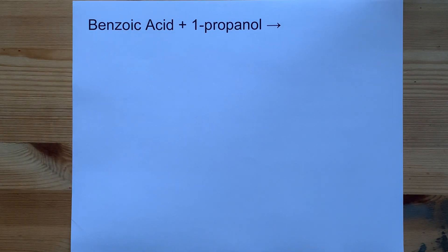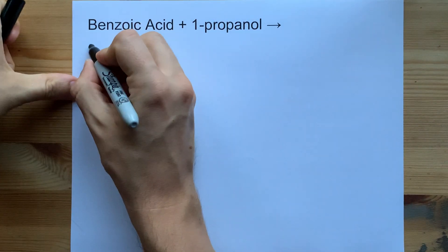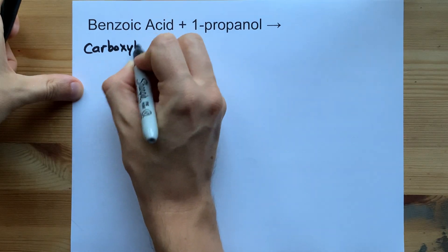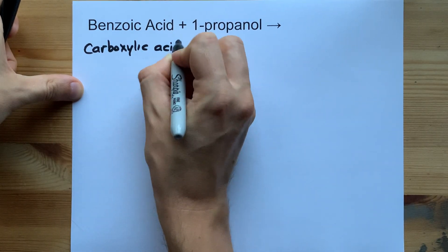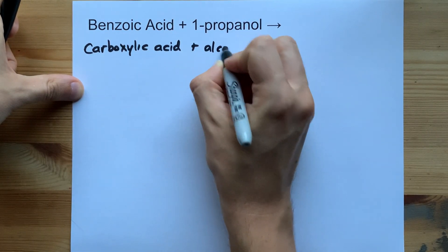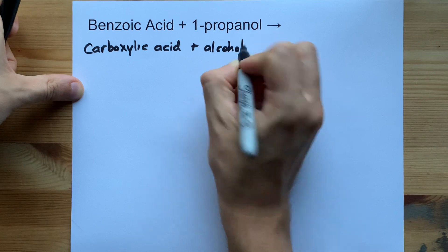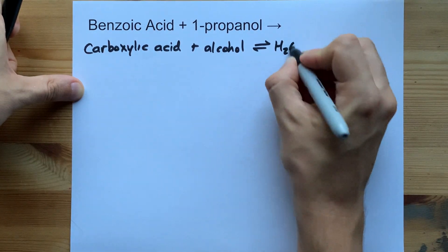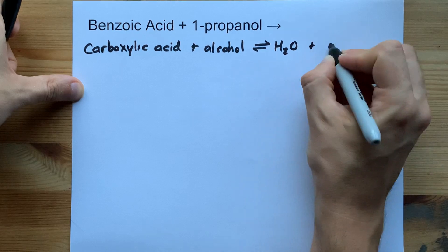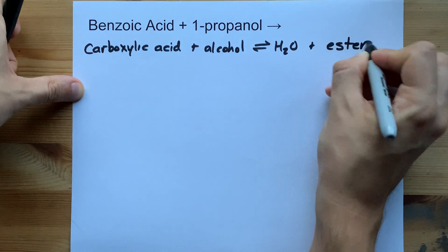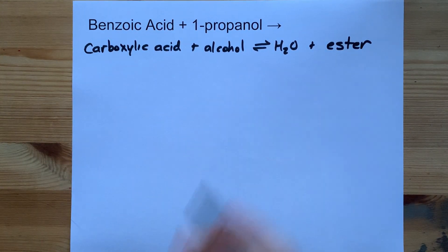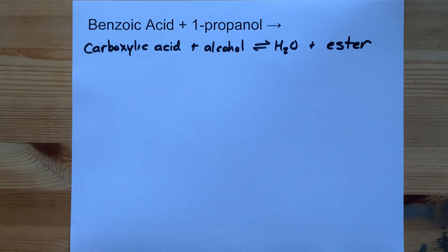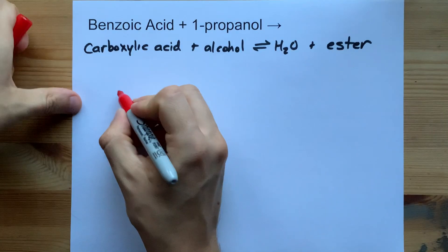Benzoic acid and 1-propanol is another example of a carboxylic acid reacting with an alcohol. Carboxylic acids and alcohols react to give you water and what's called an ester. It's going to look like a neutralization but it's not. Let's draw this for ourselves so you can see.